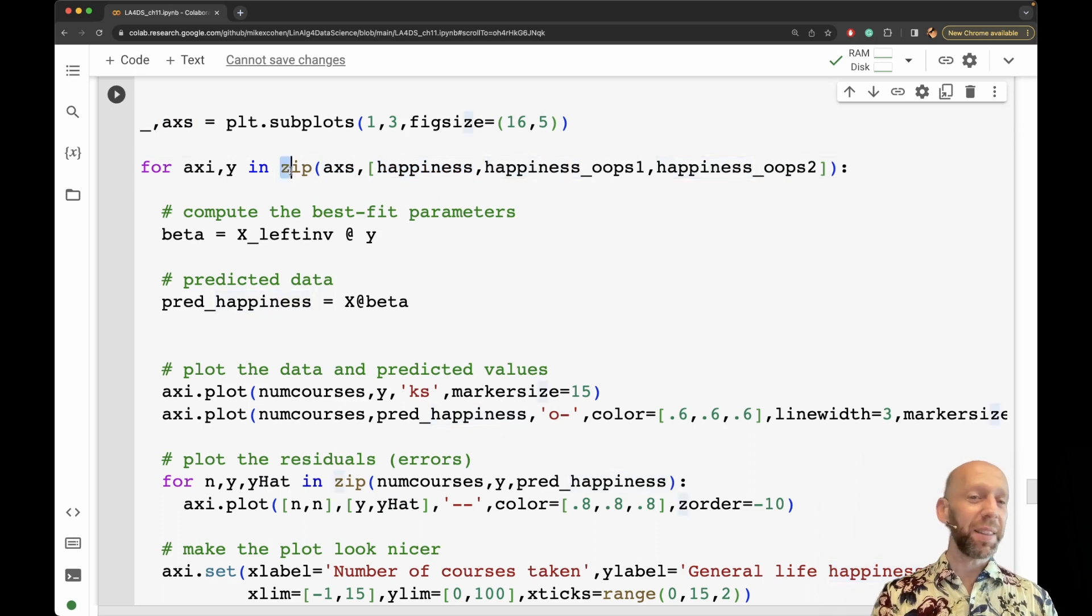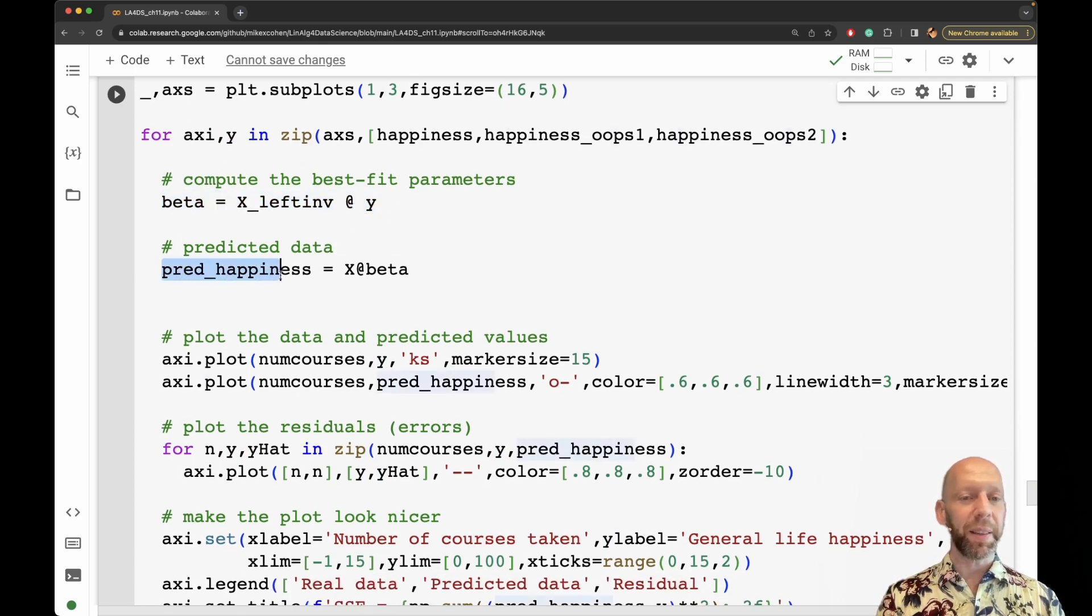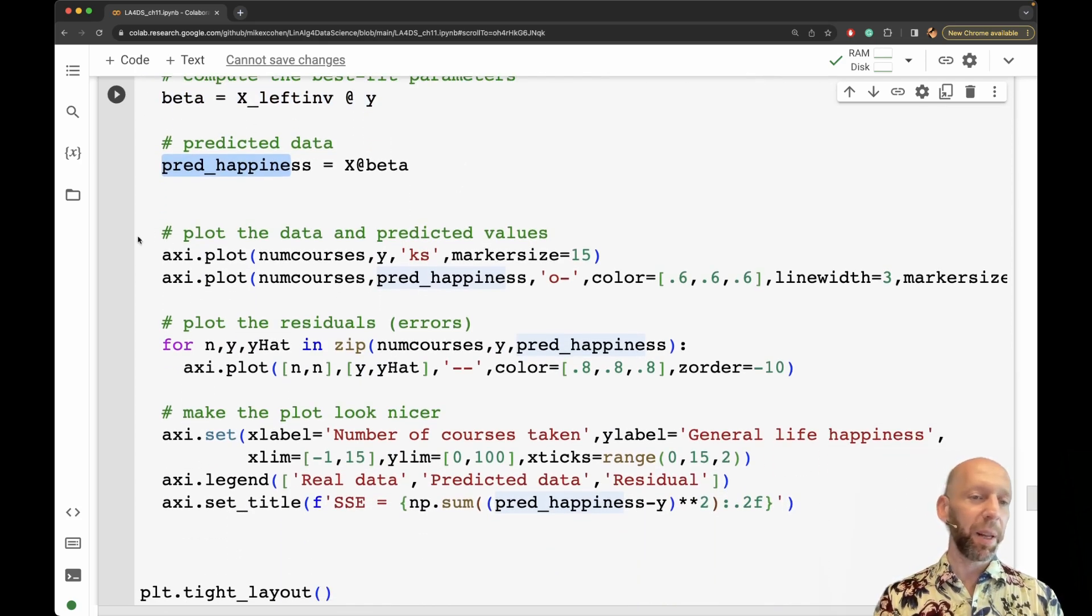If you are relatively new to Python, and this zip function is a little bit new to you, then essentially, what I'm doing is packaging up these three elements here, these three axis handles with these three data sets, and then each axis will be called ax I and each of these three variables on each loop of this for loop is going to be called y. So here I compute the beta coefficients, here I compute the predicted data. And then here I'm plotting them. So plotting the data by the predicted values.